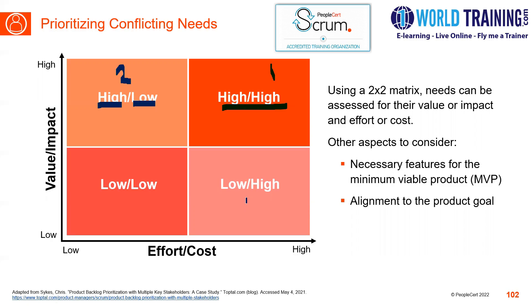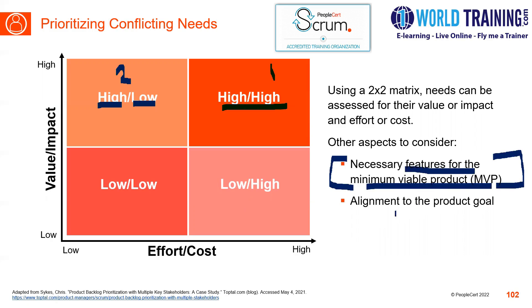When trying to do the resolution of this conflict, you need to consider other aspects as well. Those aspects include the necessary features for the minimum viable product. If you have any conflicting needs, look out for the essential features required for building the MVP. Also, we should look for alignment with the product goal — see whether the conflicting need is overall aligned to the product goal, and if it is, work in that manner.